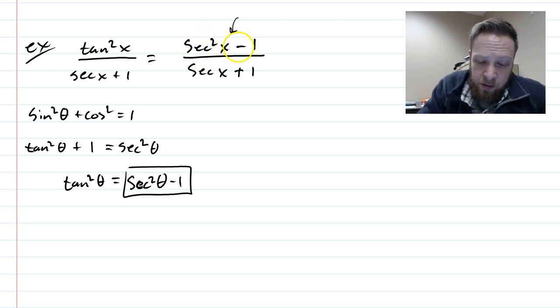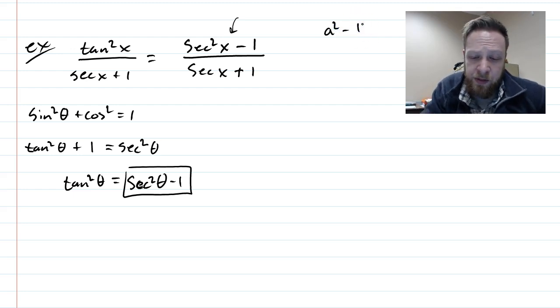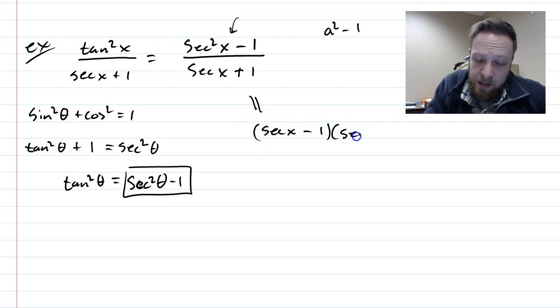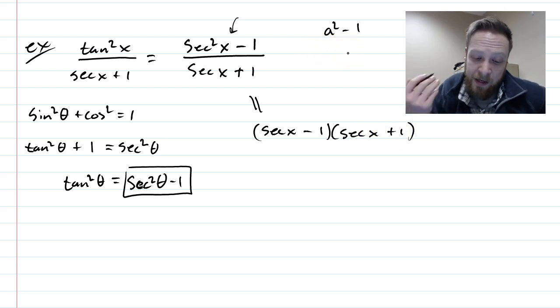This is exactly like a squared minus 1. And if you remember the difference of squares, when you see that square and the square and the minus in between, you could rewrite this now as secant x minus 1 and secant x plus 1. So it's like a plus 1, a minus 1. And instead of a, we substitute secant in.